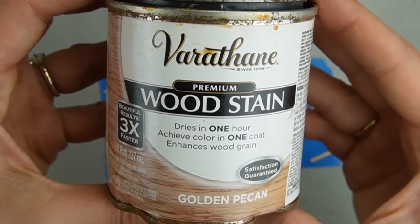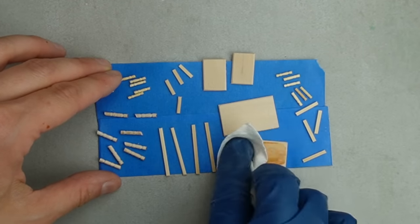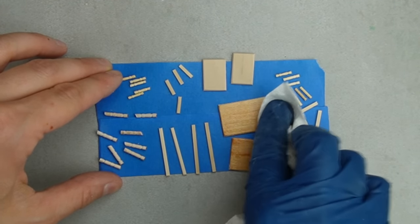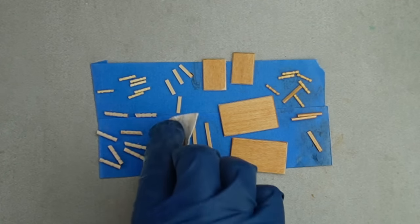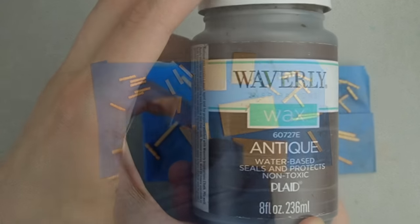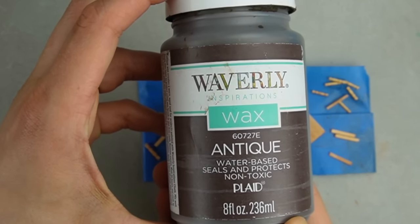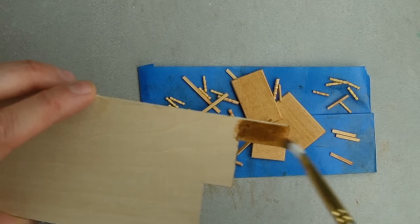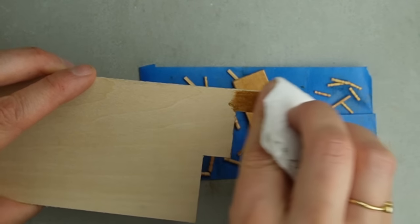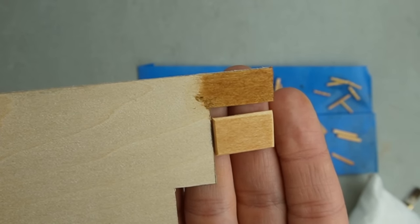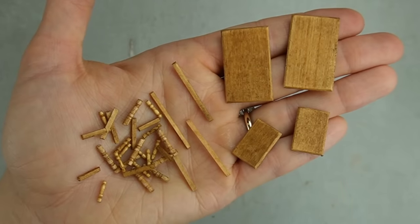I usually use watered down brown paint to stain wood but today I'm using proper stain. I'm staining before assembly so the glue doesn't block the stain and leave white spots. I prefer a darker look so I tried some antique wax from Waverly on a test piece. I brushed a layer on over the original stain and wiped away the excess. I really like how this darker tone looks so I painted the rest of the pieces.